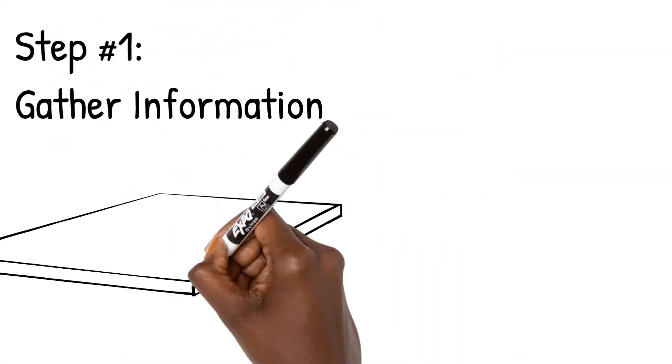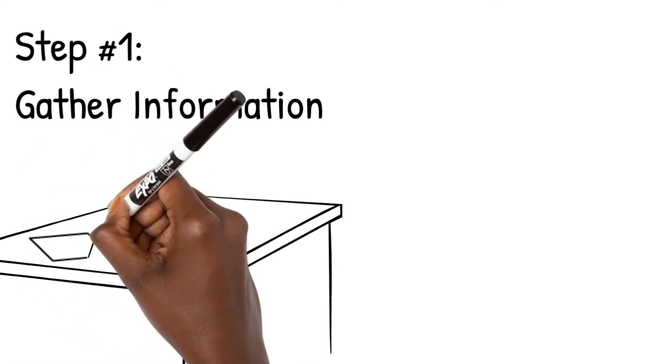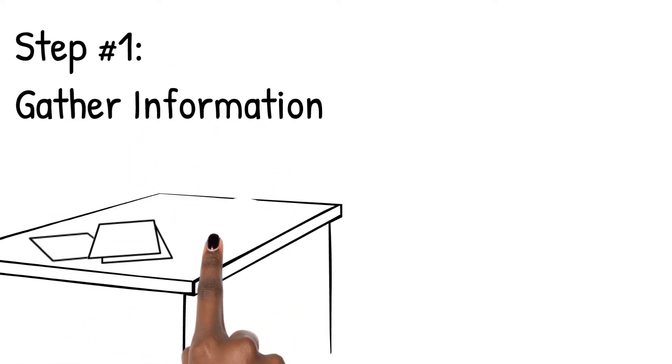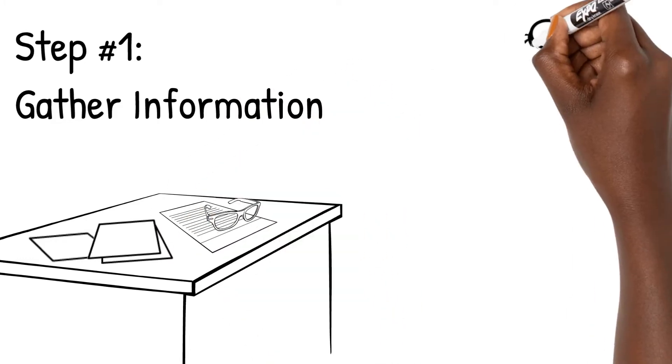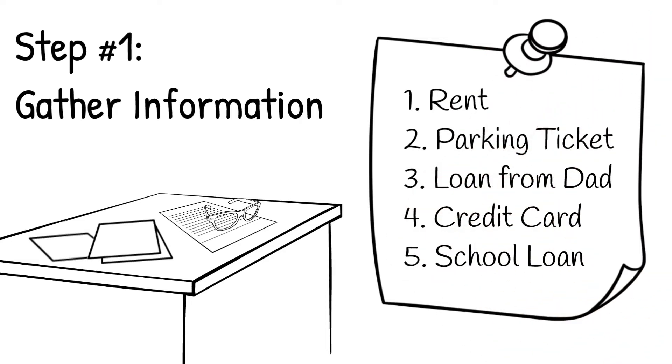Step 1. Gather information. List all your debt in no particular order. Don't forget items that might not be on your credit report, such as tickets, fines, and IOUs. It would be helpful to have all your statements in front of you or even save them in one folder.